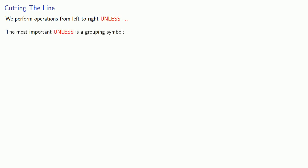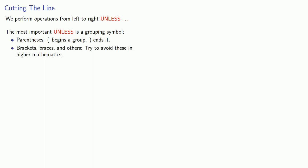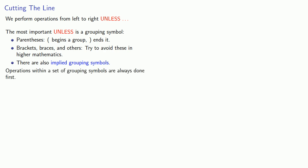The most important 'unless' is a grouping symbol. These are things like parentheses — where a left parenthesis begins a group and a right parenthesis ends it — as well as brackets and braces. We try to avoid brackets and braces in higher mathematics because they tend to have more specialized meanings. There are also implied grouping symbols, which we'll talk about a little later. Operations within a set of grouping symbols are always done first.